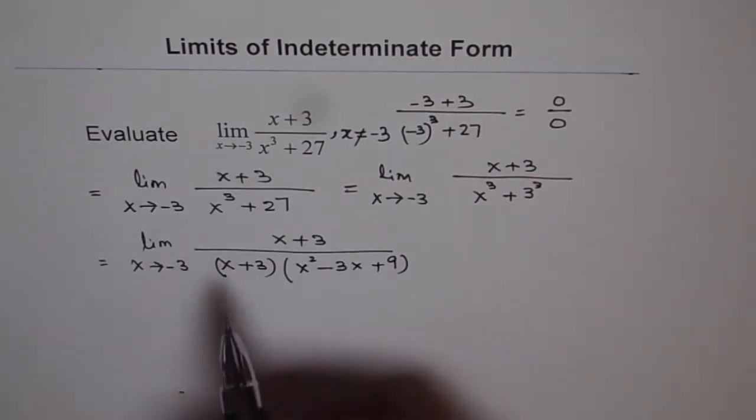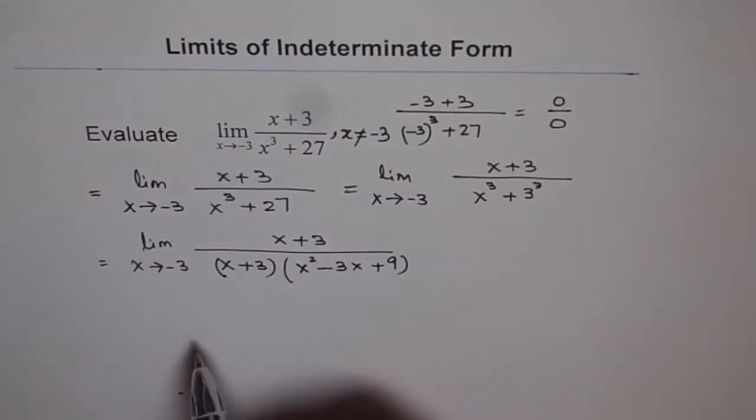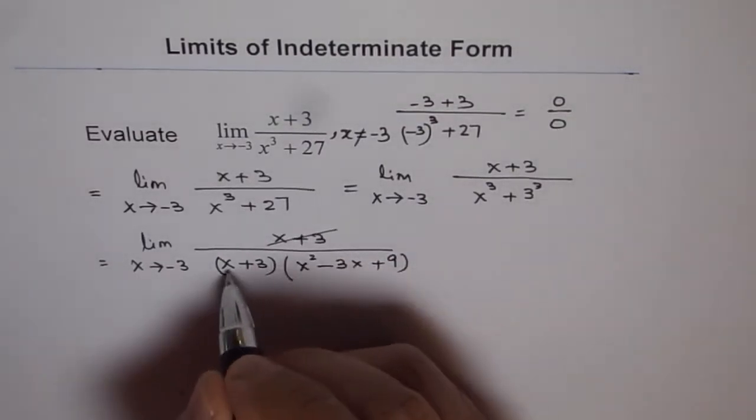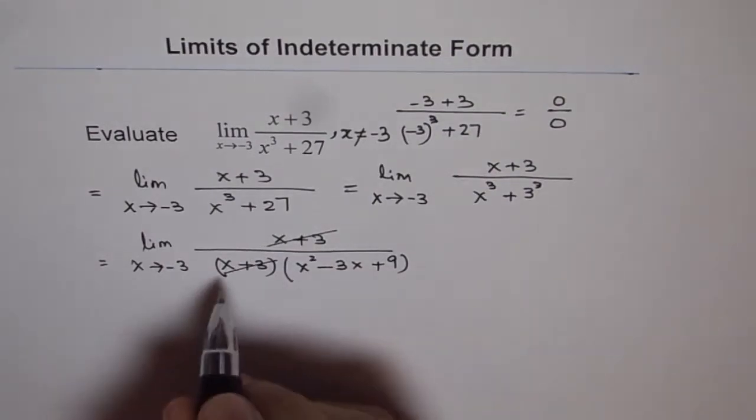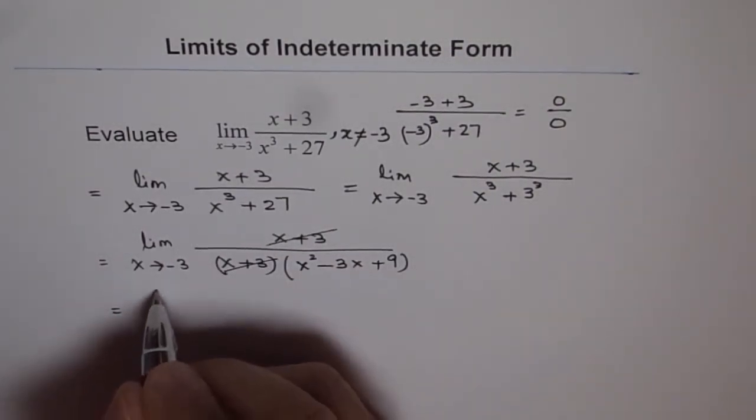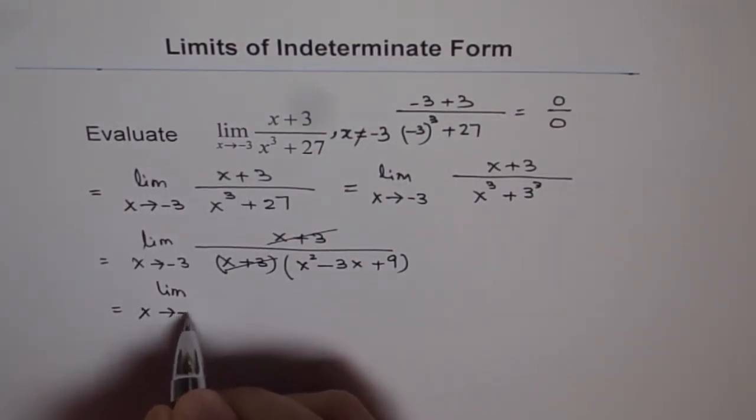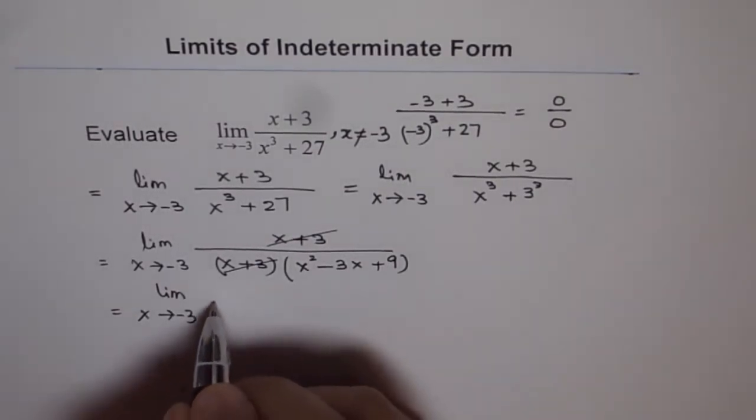And now you can see that we do have a factor x plus 3 in the numerator as well as in the denominator. Now these can be cancelled. x plus 3 divided by x plus 3 is 1.